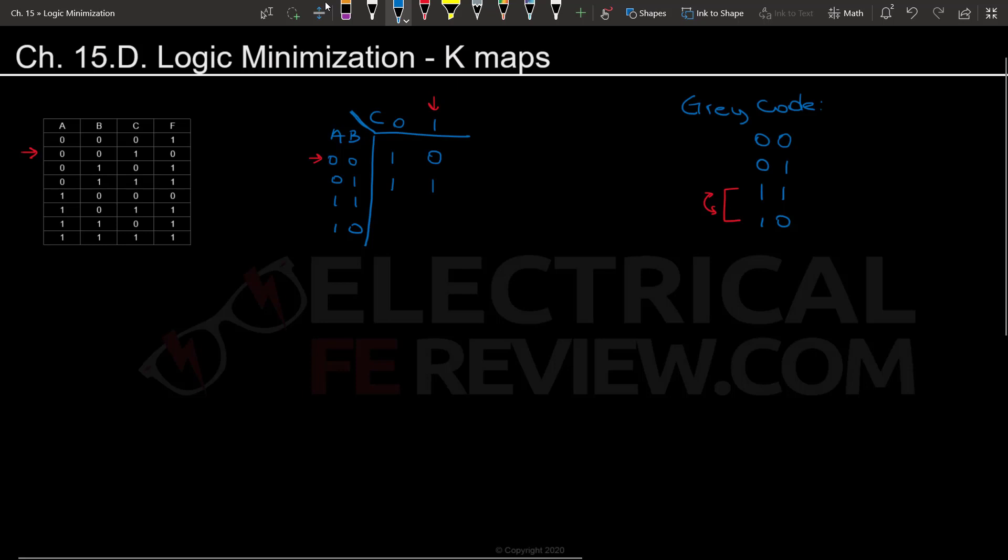011 will have a 1 as well. For 10, this is where you need to be very careful. These two are switched so you can't just keep on filling out in order. You're going to have to jump to the last line to fill out the 100 which would be a 0.